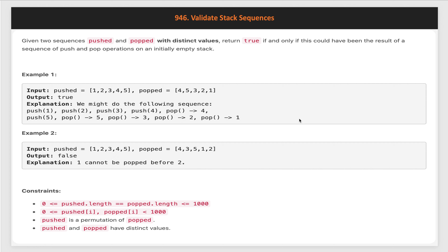Hi everyone, welcome to my channel. Let's solve the problem 'Validate Stack Sequences'. Given two sequences, pushed and popped, with distinct values, return true if and only if this could have been the result of a sequence of push and pop operations on an initially empty stack. For example, we have a pushed sequence of 1, 2, 3, 4, and 5.